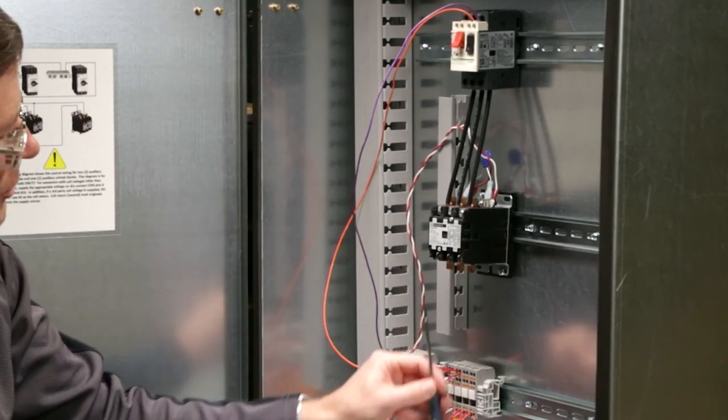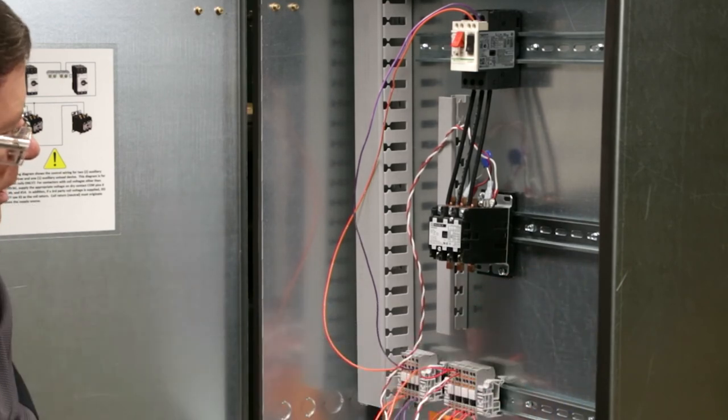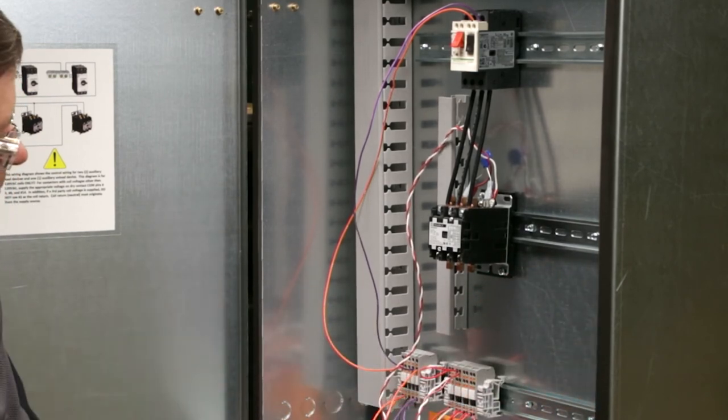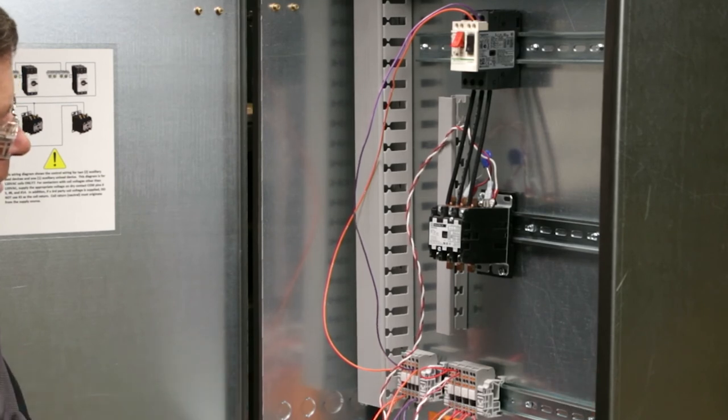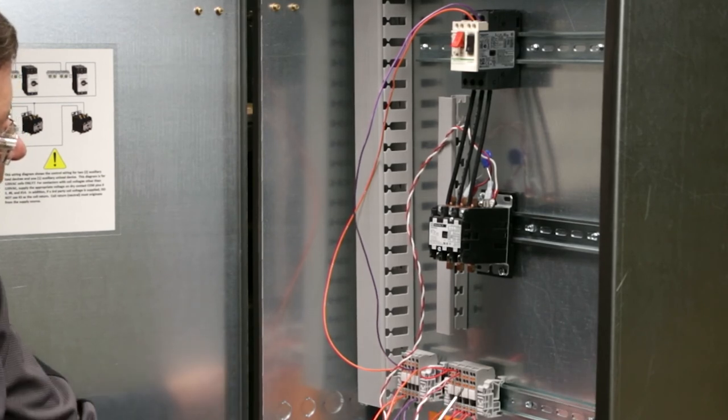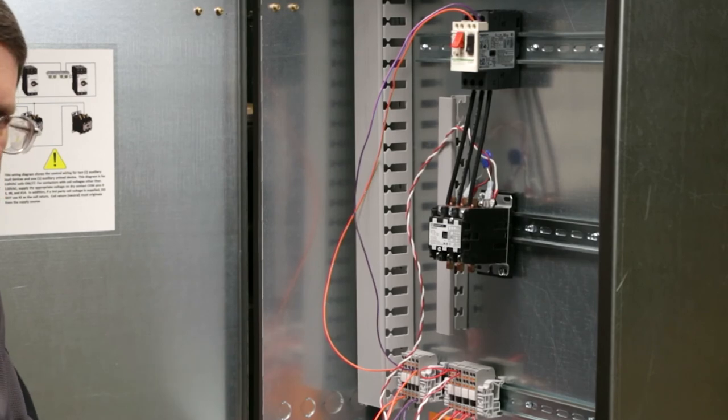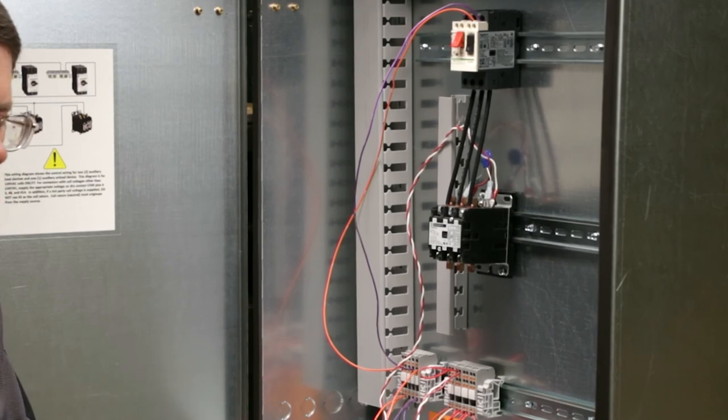The same thing would happen on your second load and your takeaway. You just end up using a different set of dry contacts. Circuit eight and nine are the second load's auxiliary and circuit 14 and 15 are the takeaway system that would be tied to your unload system.